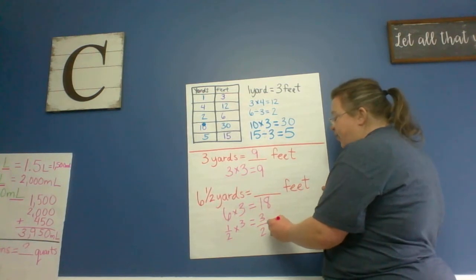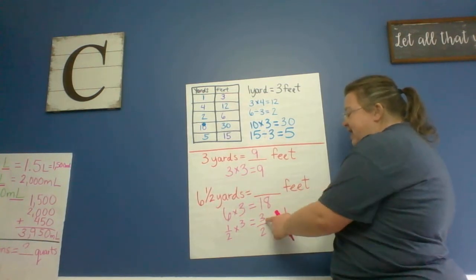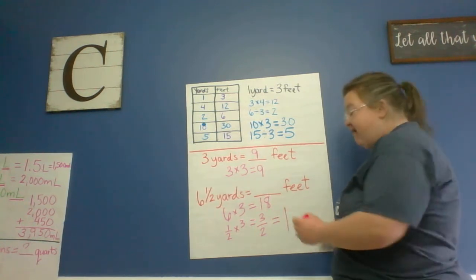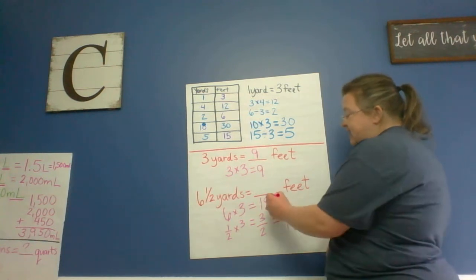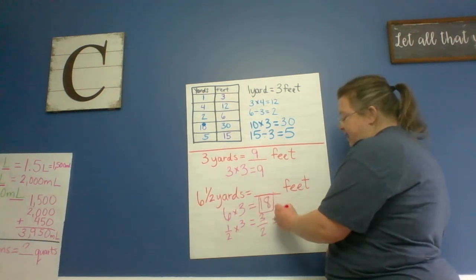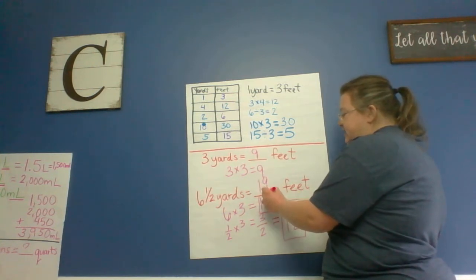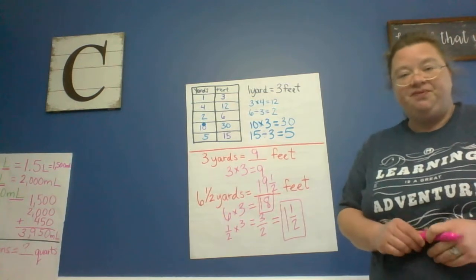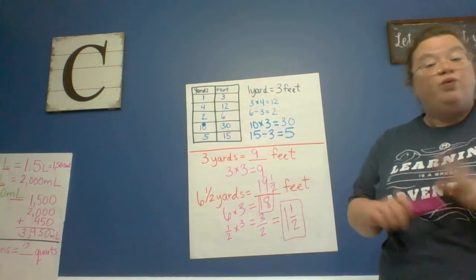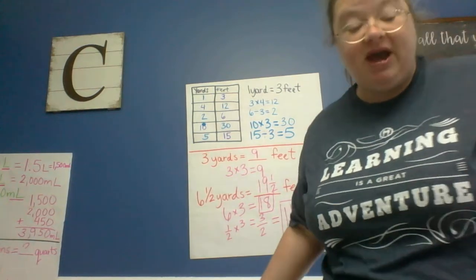So I'm going to take the whole out, which would be two halves. So that would be one. And if we take two away from three, we have one half left. So now I've got to take this 18 and this one and a half and put it together. And I get 19 and one half feet. So if that went too fast or you got lost or confused, just pause the video, go back and watch it again.